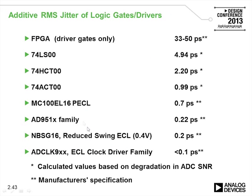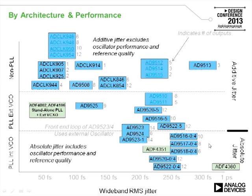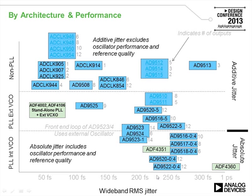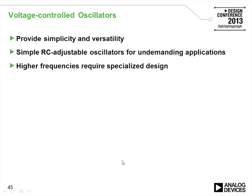The performance of various ADI chips in terms of wideband RMS jitter is shown for several available devices. The ADF4351, for example, has a jitter capability of somewhere between 200 and 250 femtoseconds. Voltage controlled oscillators are simple elements, adjustable by means of an RC circuit, capable of very high frequencies. The new ADF5508 family can generate outputs from 7 to 8 GHz.